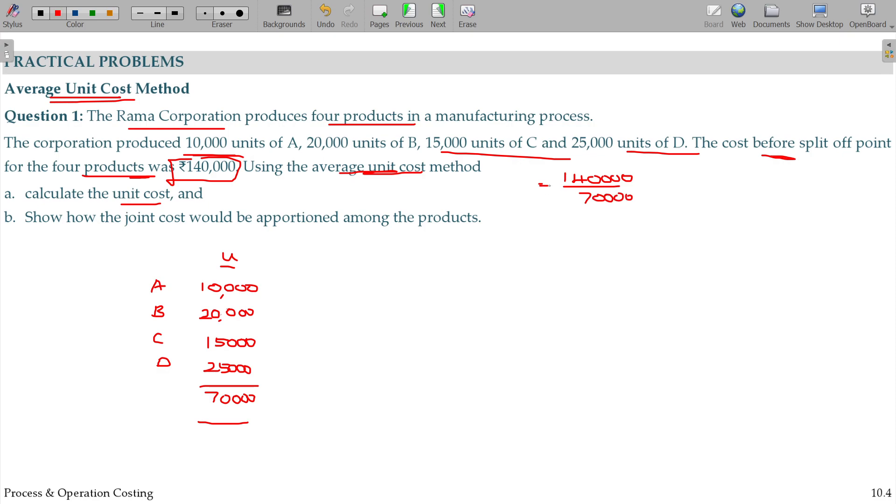We assume that the products or outputs A, B, C, D will have equal values. All units have equal values regardless of the product type.